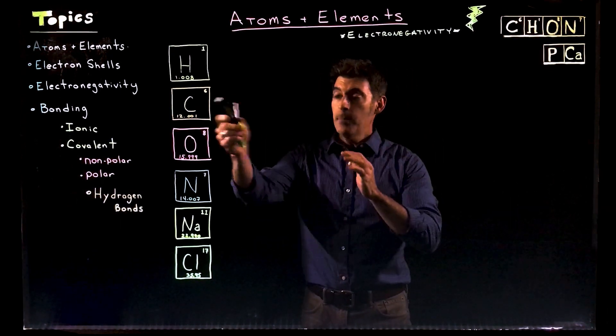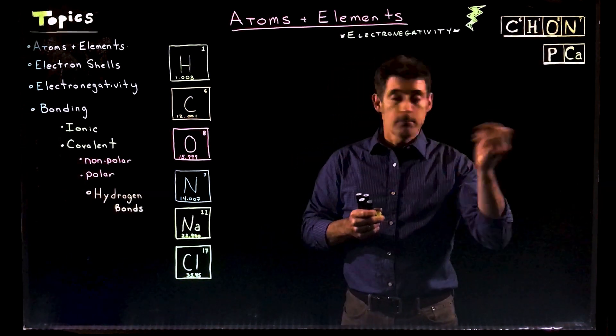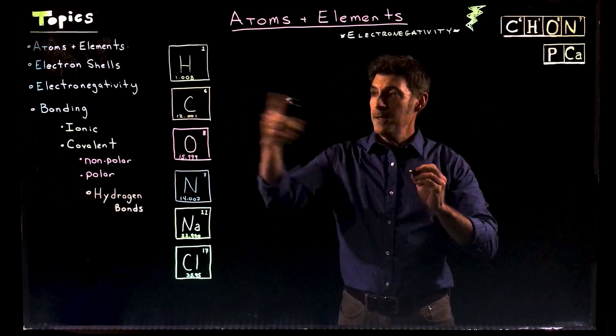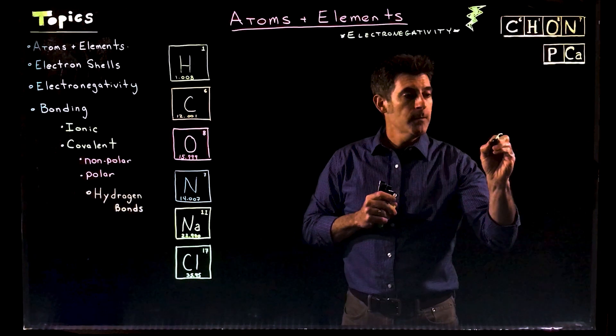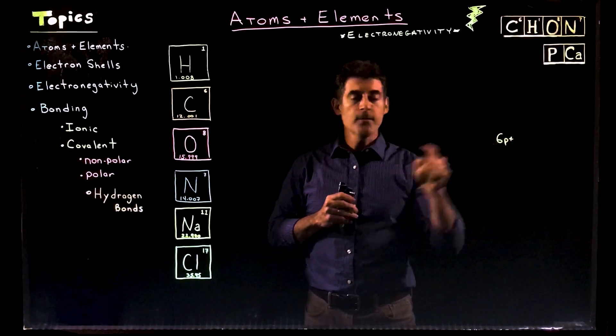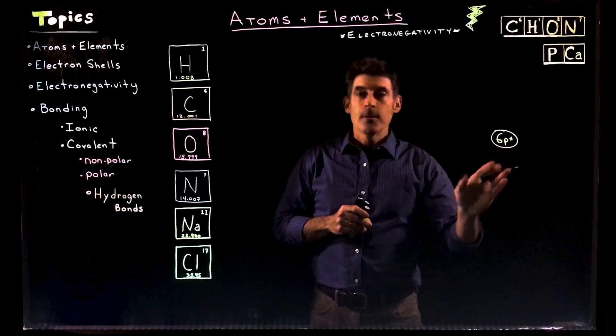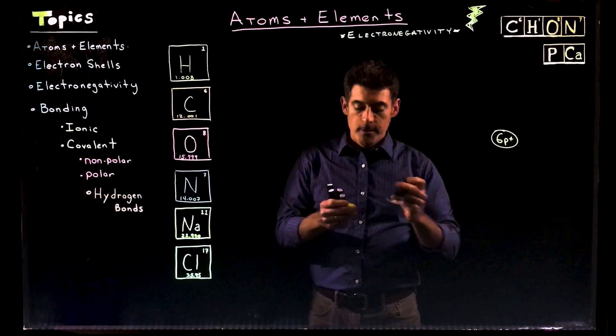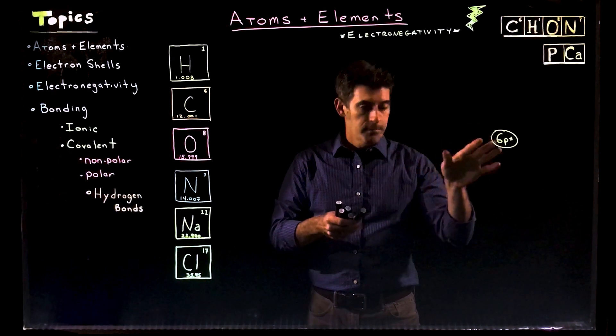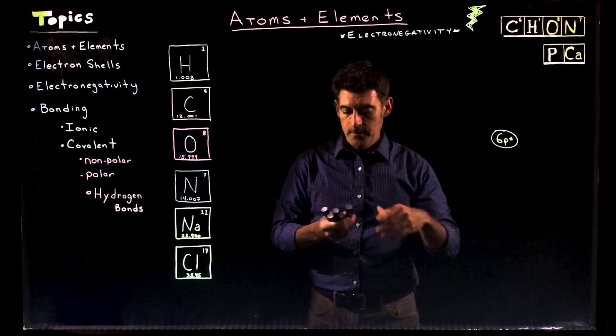So for carbon, we already started to do this. Six is the atomic number, so we have six protons. That defines it as being carbon. We're not drawing the neutrons right now, we're not really doing anything much with them. They're there, they're just invisible.